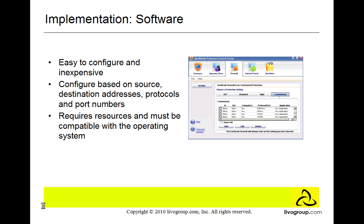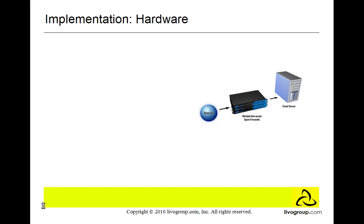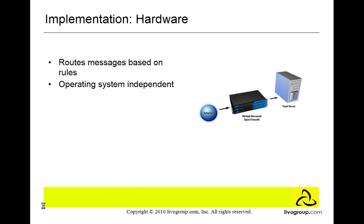However, using software firewalls requires a lot of resources and you have to have a compatible current operating system. Hardware firewalls are usually routers and they route messages based on rules. Unlike software firewalls, hardware firewalls are independent of the operating system and do not need a lot of resources. However, they are very difficult to configure.